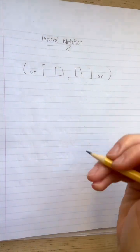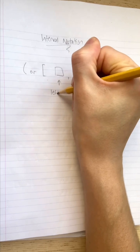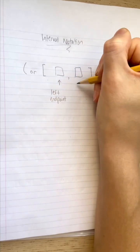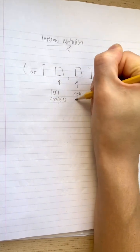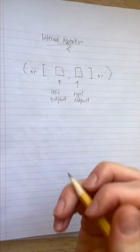An open bracket or parenthesis, our left endpoint where our interval begins, a comma, our right endpoint where our interval ends, and a closed bracket or parenthesis.